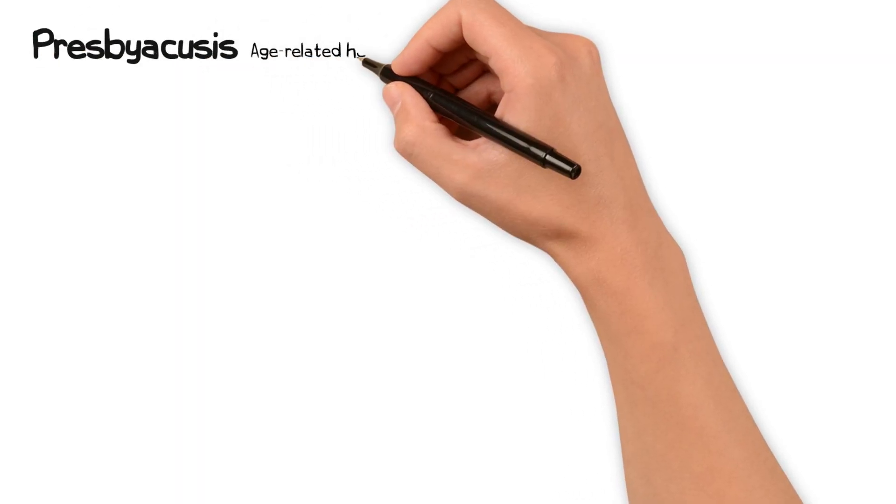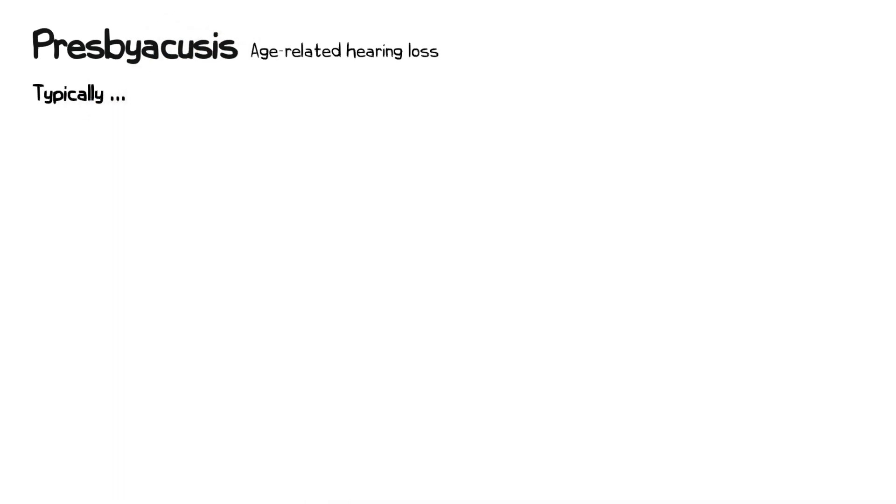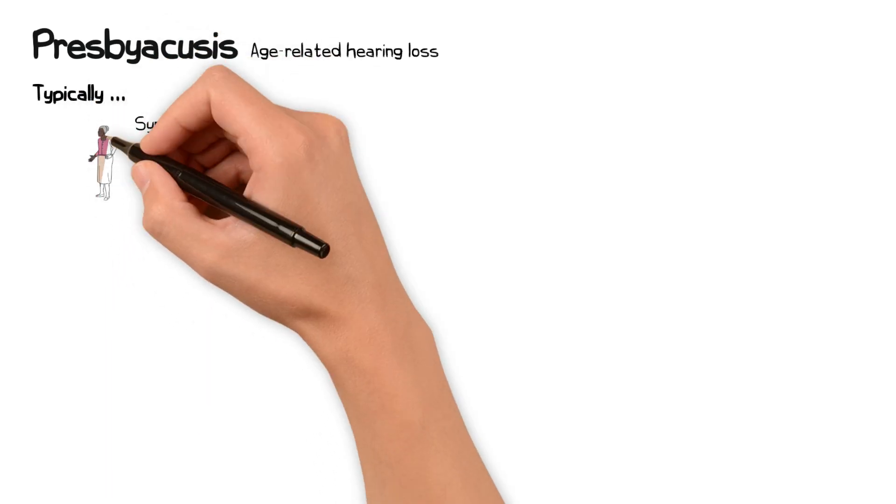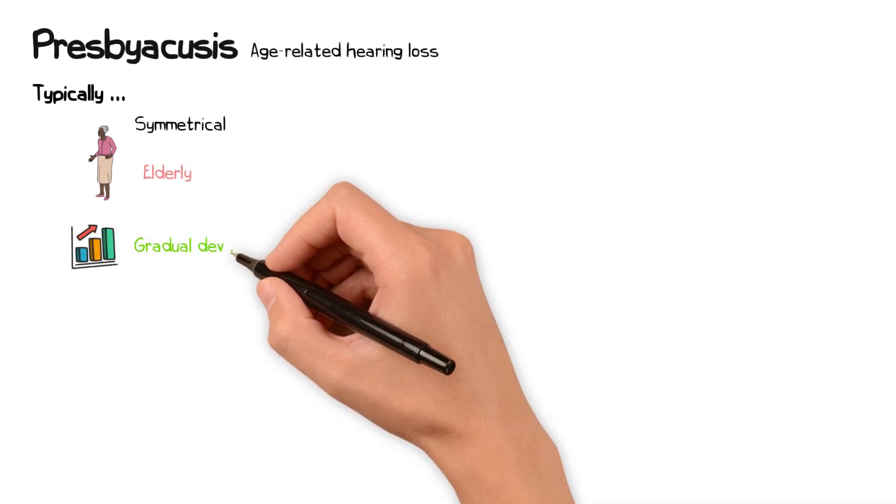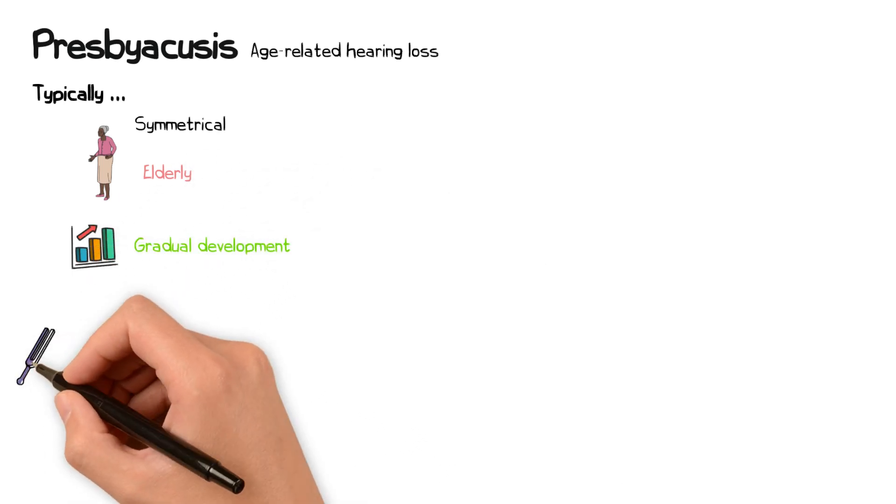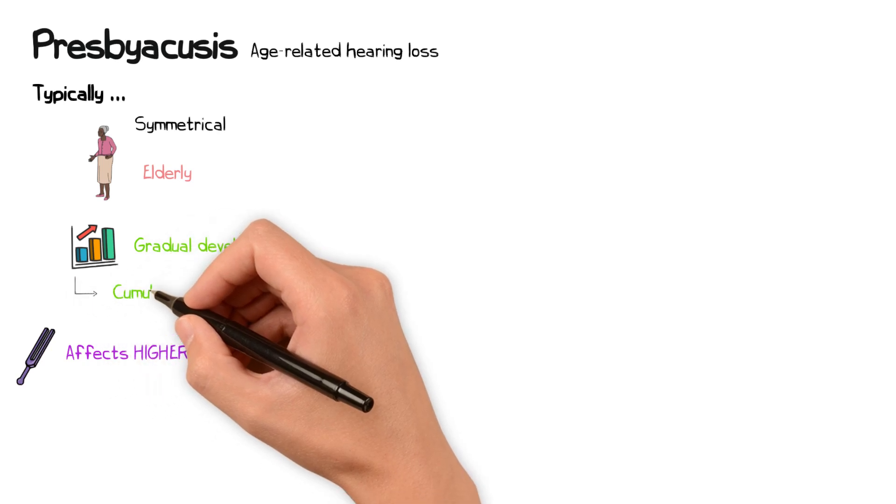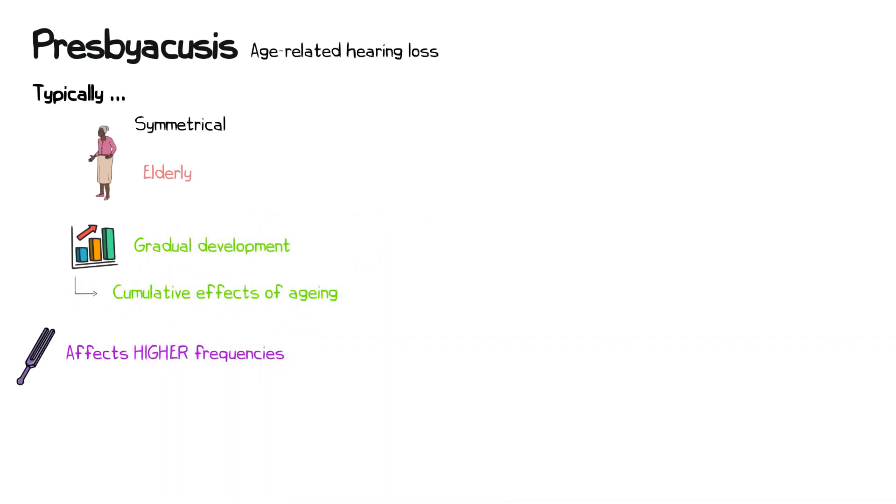Presbyacusis is the age-related loss of hearing, typically affecting both ears symmetrically. It is one of the most common sensory impairments in the elderly, often developing gradually over several years. Presbyacusis predominantly affects the higher frequencies and is caused by the cumulative effect of aging on the auditory system.